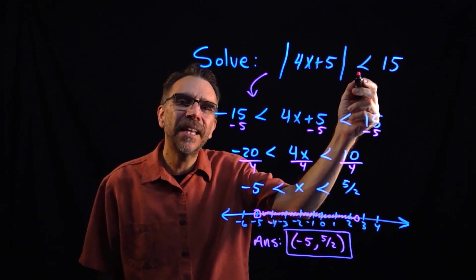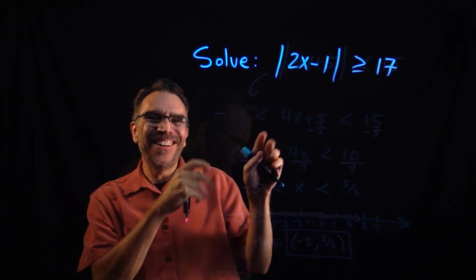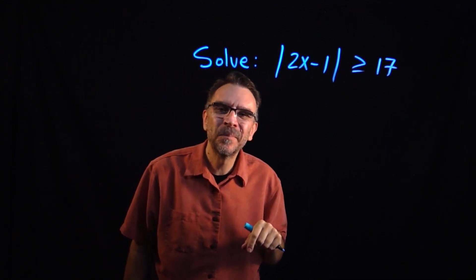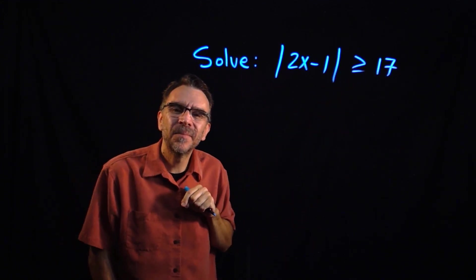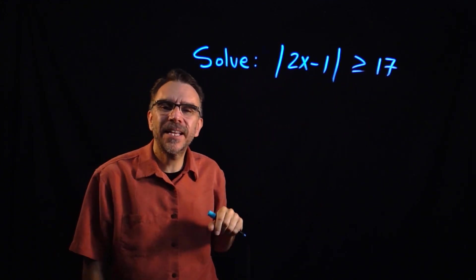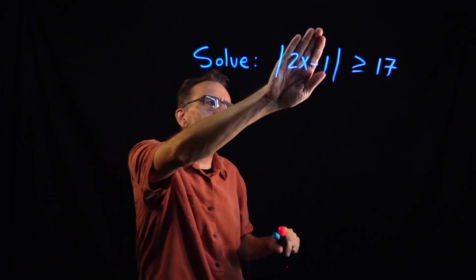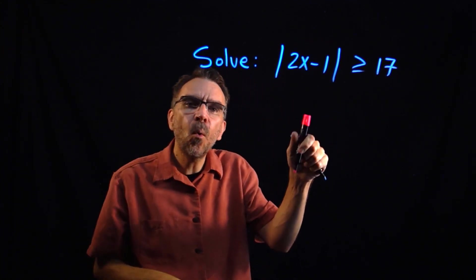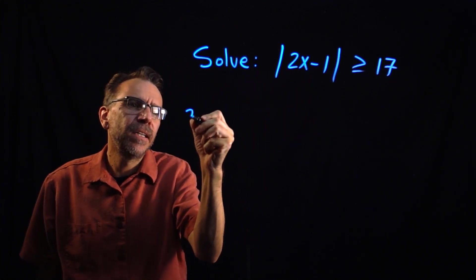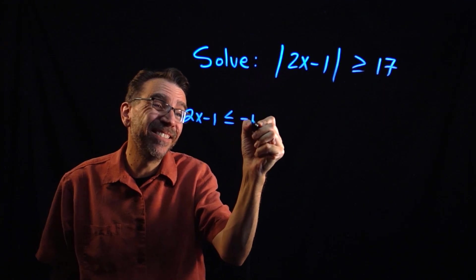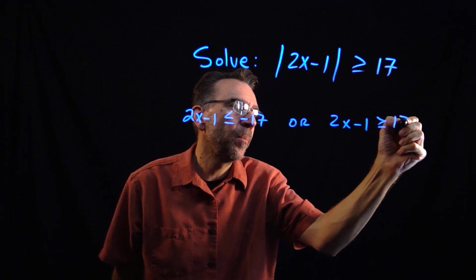That's how you set up an absolute value less than. Now let's do a greater than. Here we have the absolute value of 2x minus 1 is greater than or equal to 17. This time, with a greater than, the argument of the absolute value is either going to be greater than 17 or less than negative 17. So 2x minus 1 has to be less than or equal to negative 17, or 2x minus 1 is greater than or equal to positive 17.